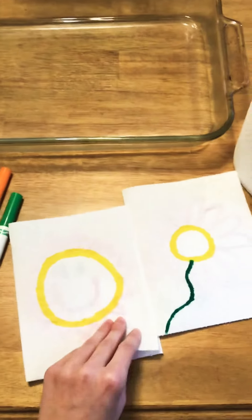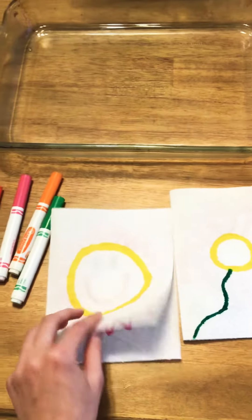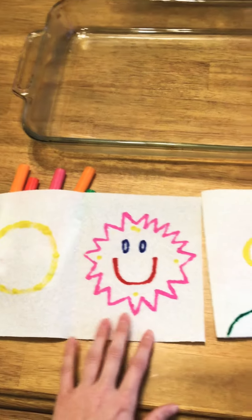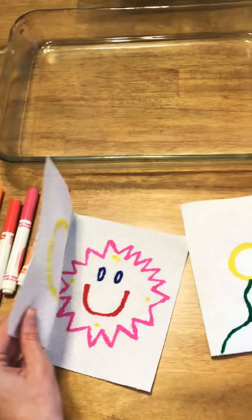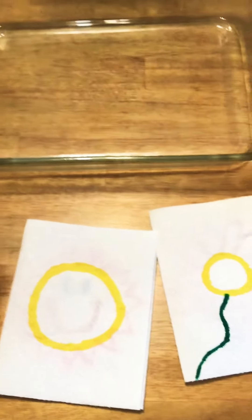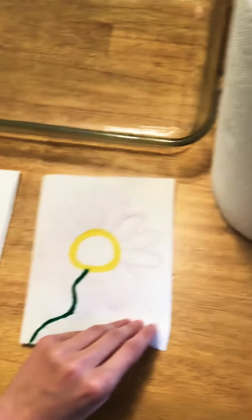Draw half of your picture on one side and then draw the other half on this side. You can see here my full picture is included on both sides. Same for this picture as well.